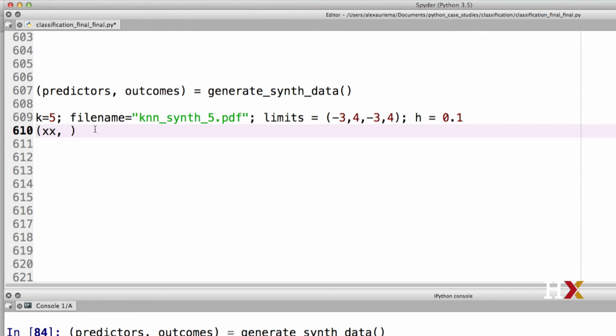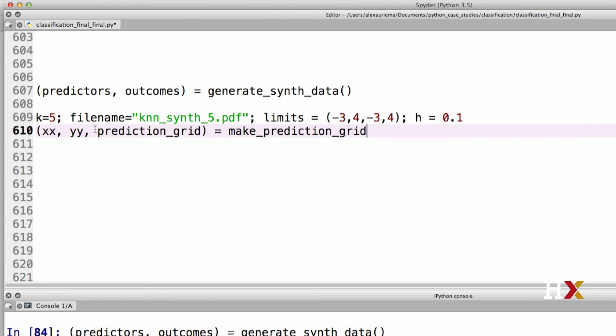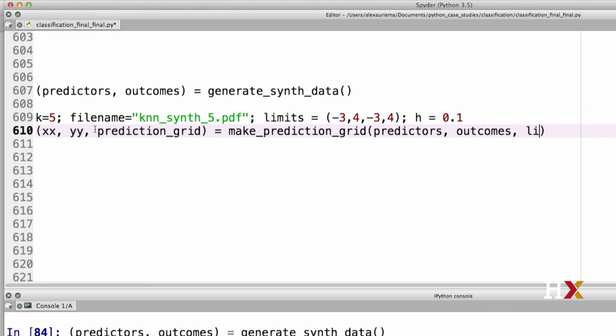We'll then call the function, so we'll capture xxy in prediction grid. The function name was called make_prediction_grid. And the inputs that we needed are predictors, outcomes, limits, h, and k.